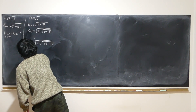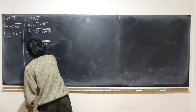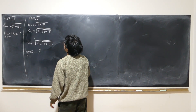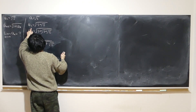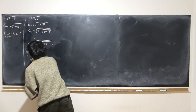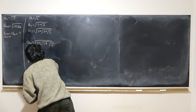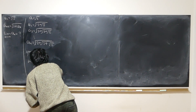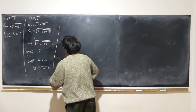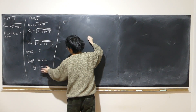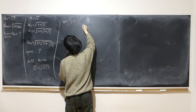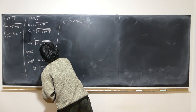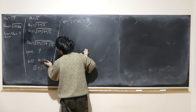Our educated guess is that the sequence is monotonically increasing. Observation: a_1 looks like it's smaller than a_2. We want to prove √2 < √(2 + √2). All we have to do is square both sides: 2 < 2 + √2. This is obviously true, so a_1 is really smaller than a_2.